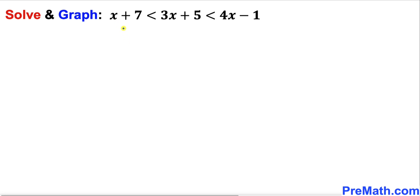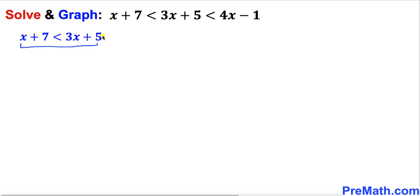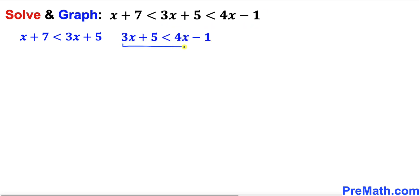In order to make our job easier, let's divide this compound inequality into two simple inequalities. The first one focuses on x plus 7 is less than 3x plus 5, and the second on 3x plus 5 is less than 4x minus 1. We are going to combine these two simple inequalities using the intersection symbol, which can also be written as 'and'.